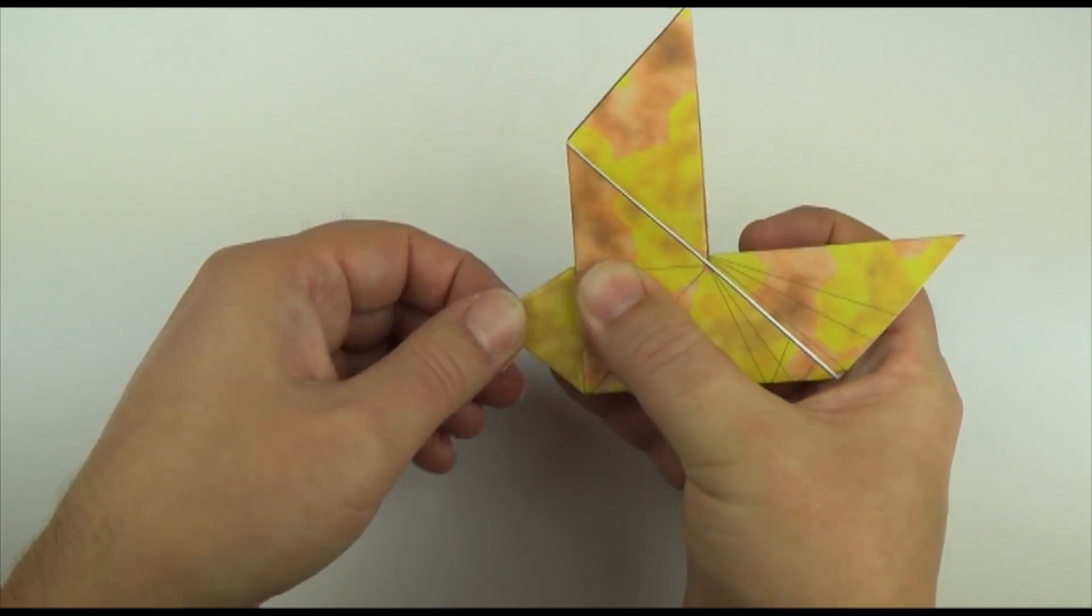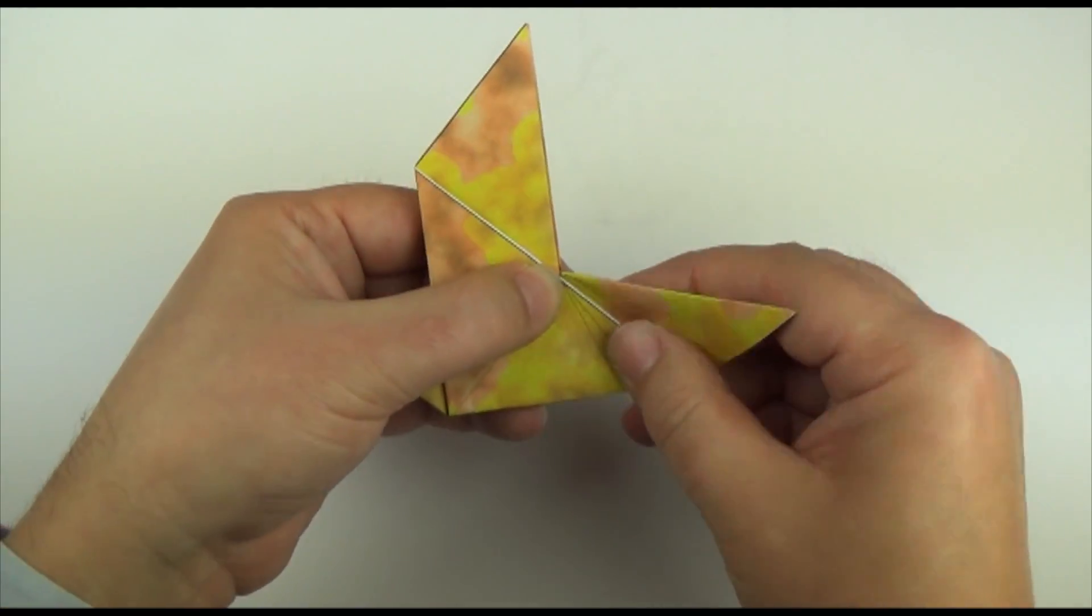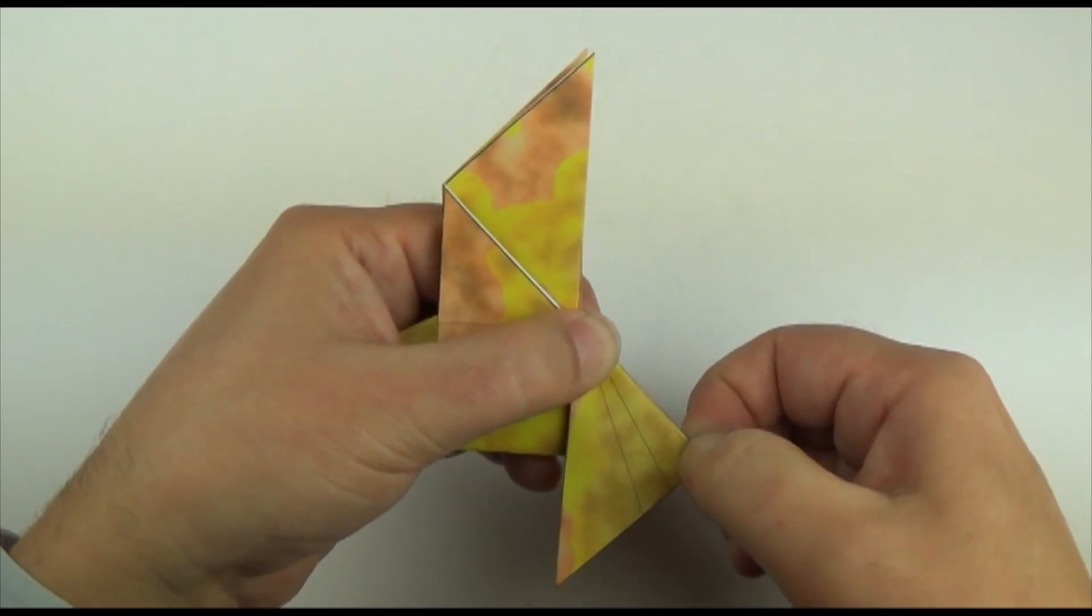It's a very simple model here. Now for the tail. Fold it down. Crease.